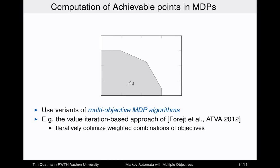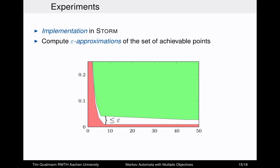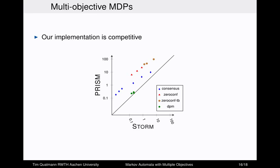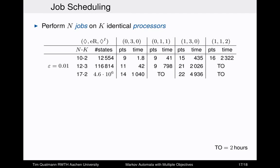To compute the achievable points in the underlying MDP and the digitized Markov automaton, we use variants of standard multi-objective MDP algorithms. We implemented this in our new model checker Storm, which will be presented on Friday. The implementation computes over-epsilon approximations of the set of achievable points. For multi-objective MDPs, we compared our implementation with PRISM and found the two implementations are competitive with each other.